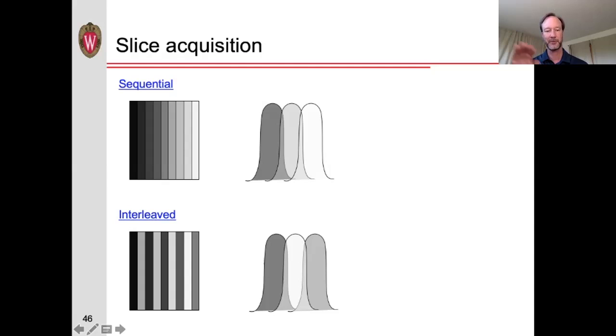So, a lot of longitudinal magnetization will have already recovered, and we won't lose as much signal in this part of the slice. In contrast, for the sequential acquisition, that signal will only have been acquired about 50 milliseconds beforehand, and so a lot of that magnetization is still gone. It hasn't been fully recovered.